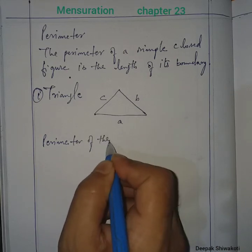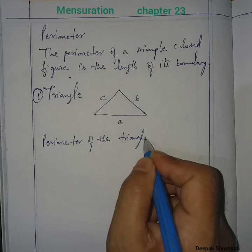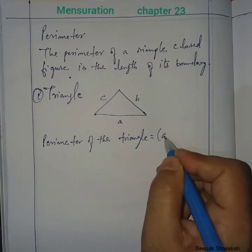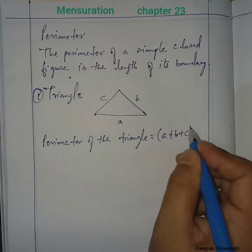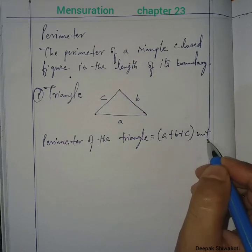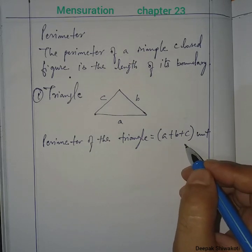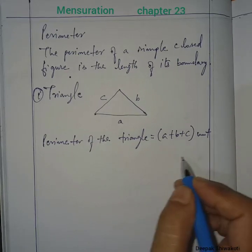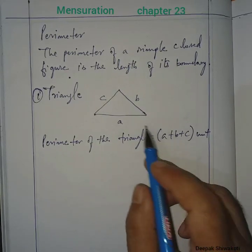So the perimeter of a triangle is equal to a + b + c units, where the unit can be centimeter, millimeter, kilometer, or meter — whatever unit is given.